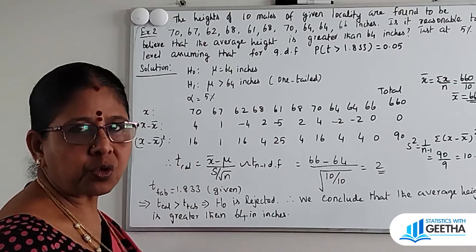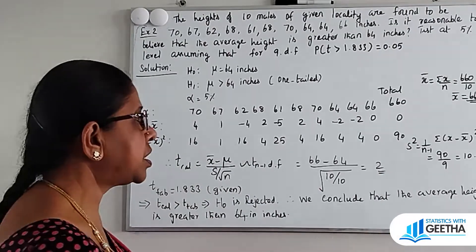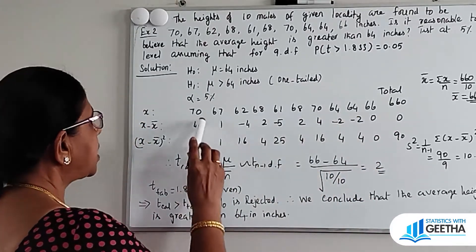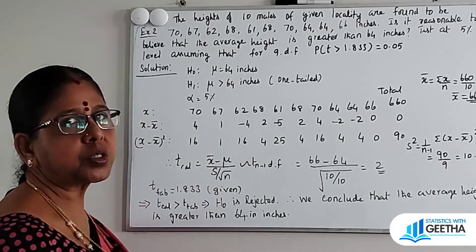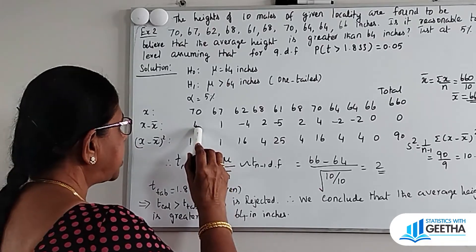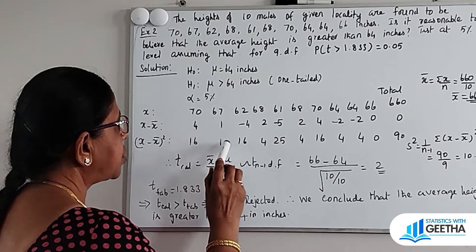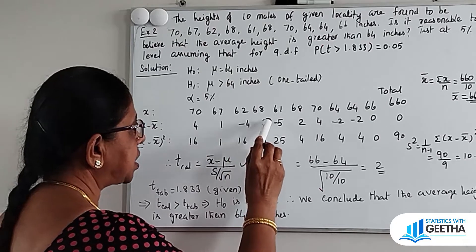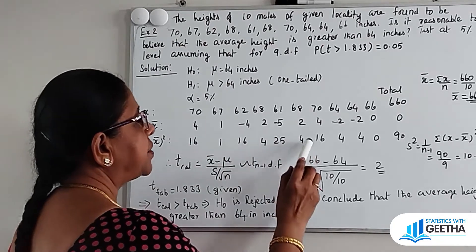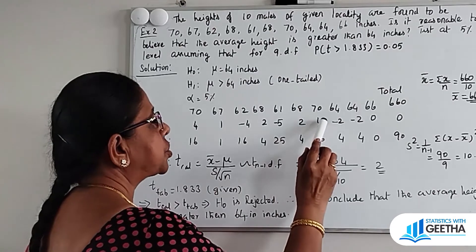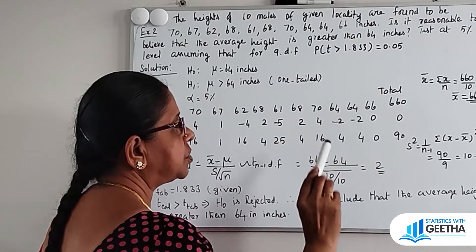Summation of (x minus x-bar) equals 0. This verifies the mean. Now (x minus x-bar) squared for each value: 4 squared = 16; 1 squared = 1; (minus 4) squared = 16; 2 squared = 4; (minus 5) squared = 25; 2 squared = 4; 4 squared = 16; (minus 2) squared = 4; (minus 2) squared = 4; 0 squared = 0.